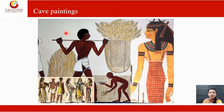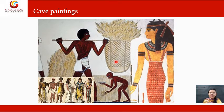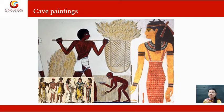Cave paintings are a type of parietal art, a category that also includes petroglyphs or engravings found on the walls or ceilings of caves, as shown in the slide. The term usually implies prehistoric origin. In the Gavarabang cave of Northern Australia, the oldest paintings certainly predate 28,000 years ago, while the most recent ones were made less than a century ago. Cave paintings are found on the walls and ceilings of caves.